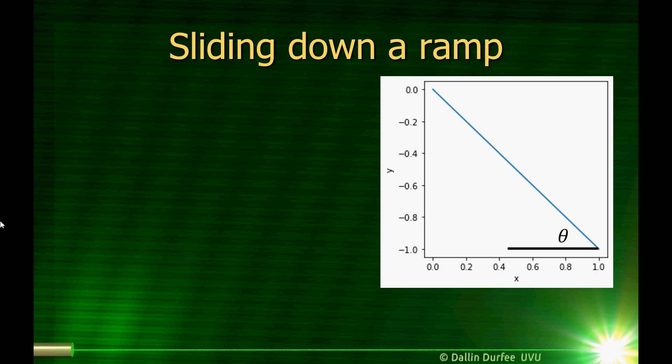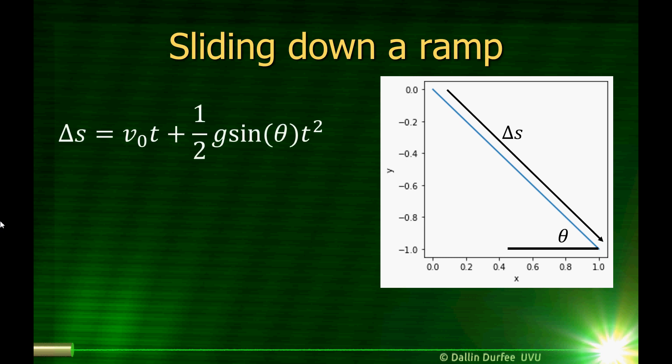To find the time, I'm going to use my distance equation. So if we call the distance that the object slides as it goes down the ramp delta s, our equations for constant acceleration tell us that delta s will just be v-naught t plus one-half g sine of theta times t squared. So it's v-naught t plus one-half the acceleration times t squared, and we decided that the acceleration is g sine of theta.